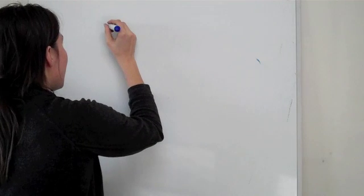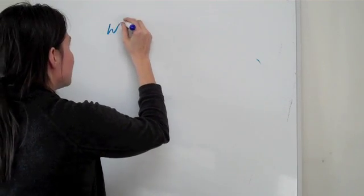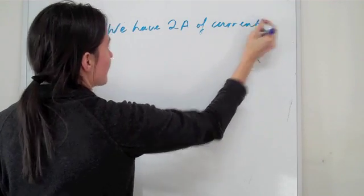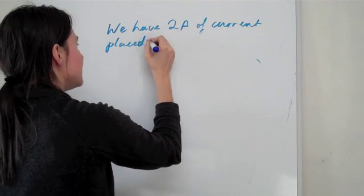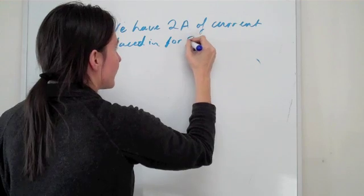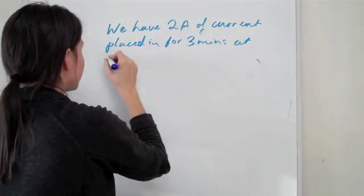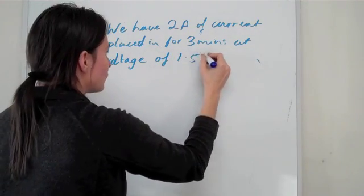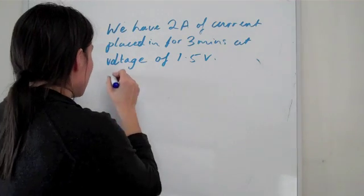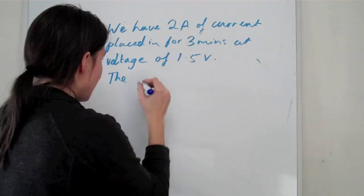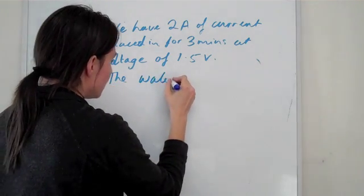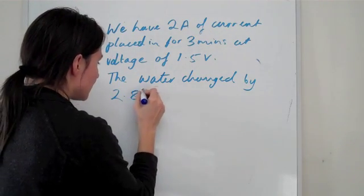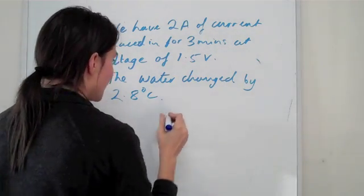Let's say that we know when we inputted we had two amps of current placed in for three minutes at a voltage, at a potential difference of voltage, of 1.5 volts. And the water changed by 2.8 degrees Celsius.